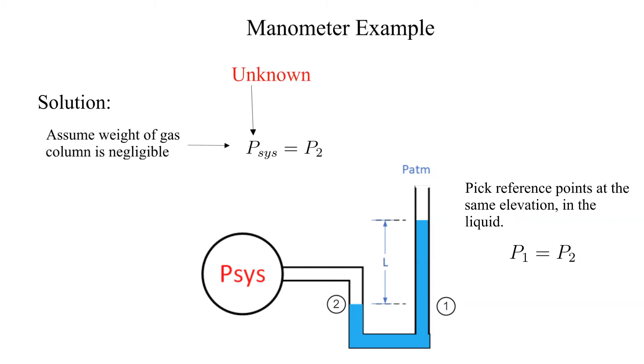Some more complex manometer problems have multiple liquids, and setup may not be as straightforward. Here is a solution hint. Two reference points are at the same pressure if they are at the same elevation, and you can trace a continuous path from the first point to the second. This is shown here, although not really necessary for such a simple problem.